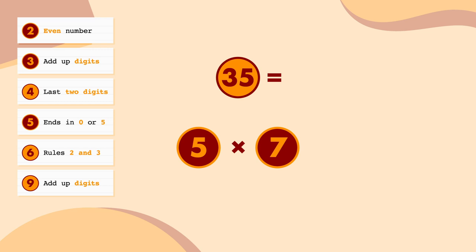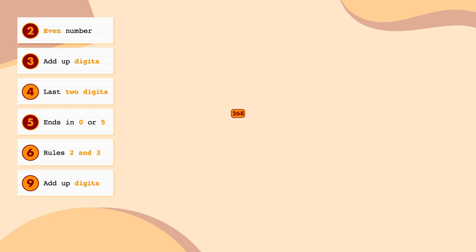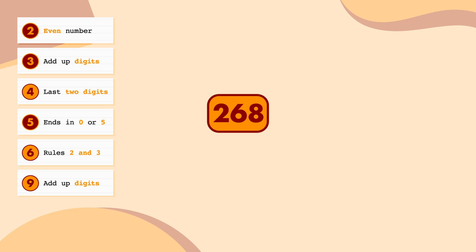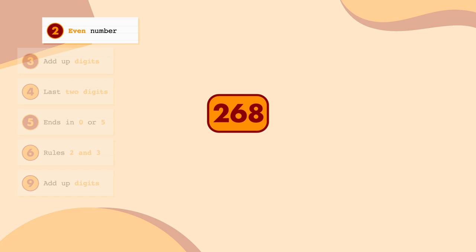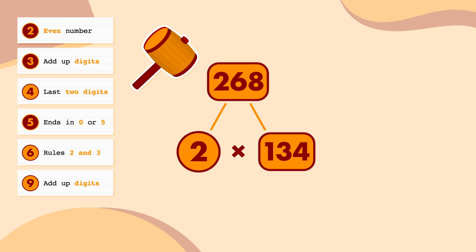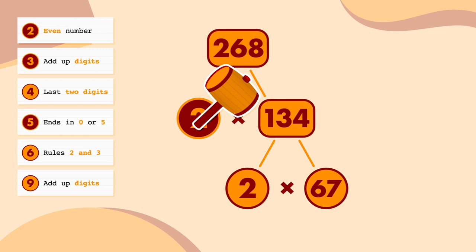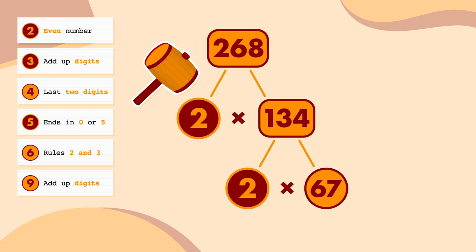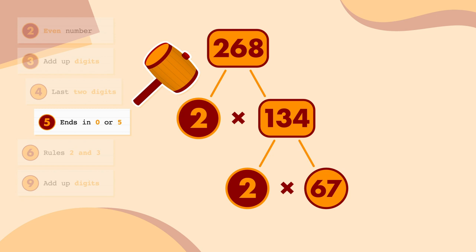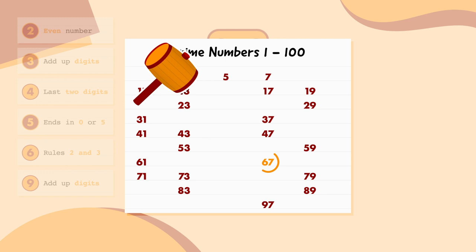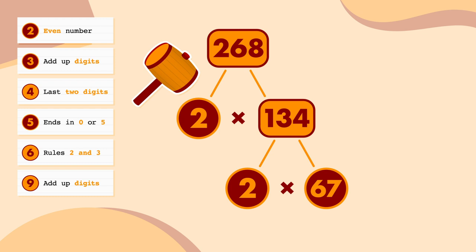Here's the next number: 268. 268 is an even number, so we can divide it by 2. We know 2 is a prime number, so it can't be broken down further. What about 134? That's also even, so we can divide it by 2 as well. 134 divided by 2 is equal to 67. 2 is a prime number — but what about 67? 67 can't be divided by 2, 3, 4, 5, 6, or 9. There it is on my list — 67 is a prime number. So 268 as a product of prime numbers equals 2 times 2 times 67.